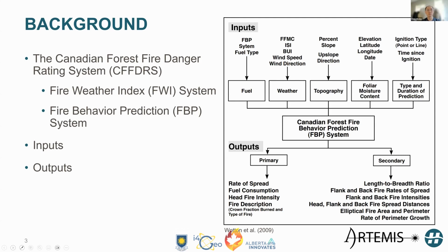The CFFDRS has two subcomponents. The first one is the Fire Weather Index System, which serves the purpose of tracking fire weather — in particular the ignition conditions, because if it doesn't ignite, there will be no fires. The second component is the Fire Behavior Prediction, or FBP system, which deals with simulating or monitoring the spread of fire.